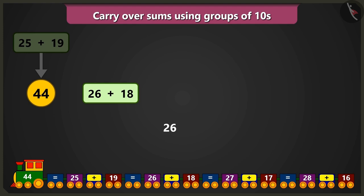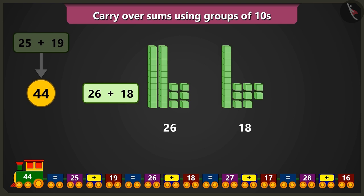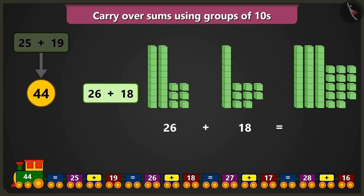Come on, let us add 26, which is 2 tens and 6 ones, to 18, which is 1 ten and 8 ones. Adding 6 ones and 8 ones will result in 14, that is 1 ten and 4 ones.